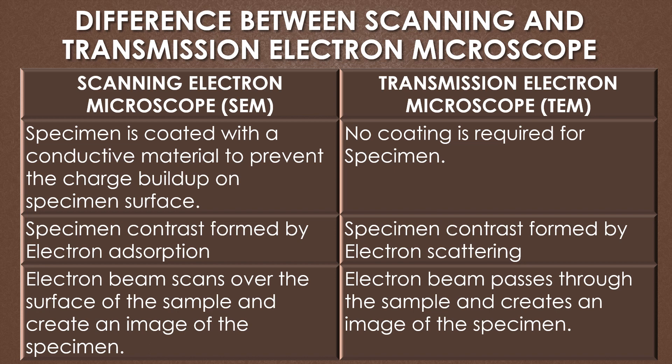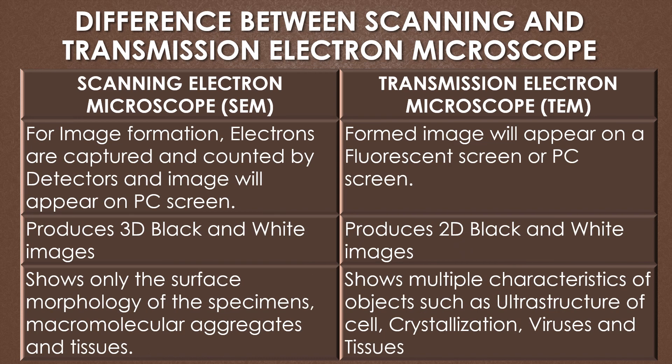In the SEM, the electron beam scans over the surface of the sample to create an image. For image formation in the SEM, the electrons are captured and counted by detectors and the image appears on the PC screen. In the transmission electron microscope, the electron beam passes through the sample and the formed image appears on the fluorescent screen or the PC screen.